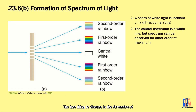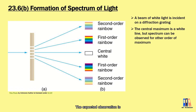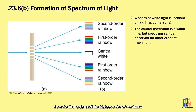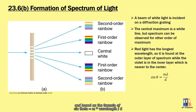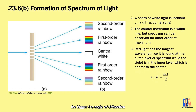The last thing to discuss is the formation of a spectrum of light. This can be produced by having white light incident on a diffraction grating. The expected observation is that there is white light in the center as the central maximum, and then we can observe the spectrum in other orders of maximum, from the first order until the highest order. The arrangement of colors can be explained by wavelength. Red has the longest wavelength, and based on the formula sin θ = mλ/d, the longer the wavelength, the bigger the angle of diffraction. So this is why red light appears at the outer layer of the spectrum.